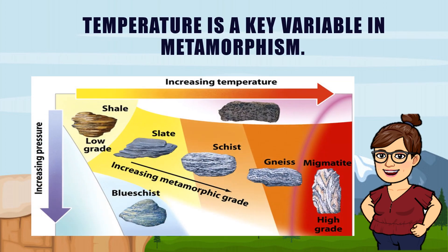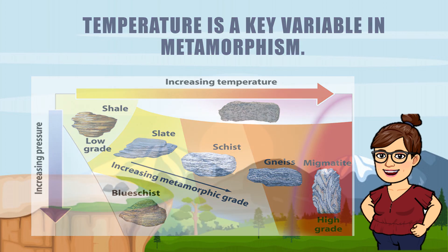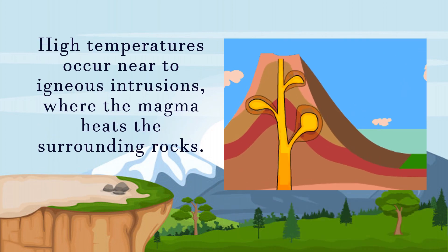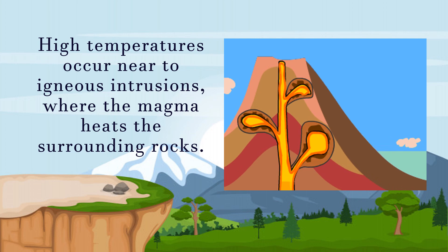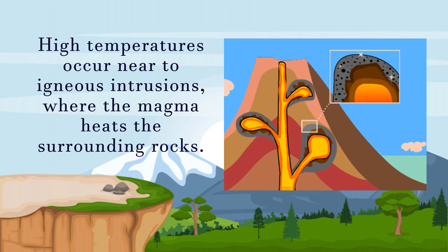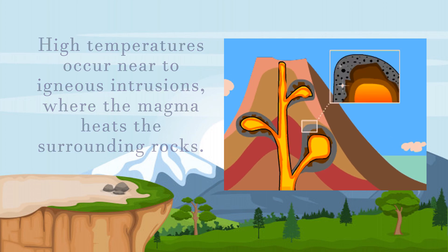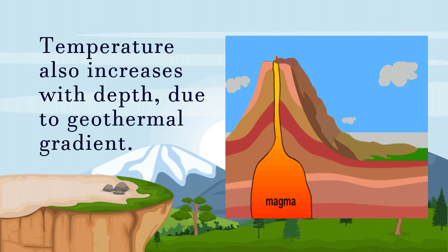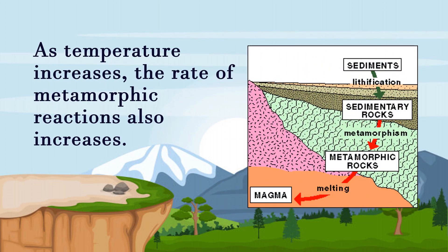Temperature is a key variable in metamorphism. High temperatures occur near igneous intrusions, where the magma heats the surrounding rocks. Temperature also increases with depth due to geothermal gradient. As temperature increases, the rate of metamorphic reactions also increases, because many of the chemical reactions require heat to take place.